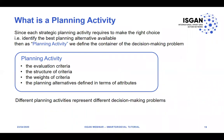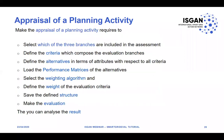Regarding the terminology of the software: since each planning activity requires making the right choice — basically identifying the best planning alternative — we define a planning activity as the container of the decision-making problem. A planning activity is formed by the evaluation criteria, the structure of those criteria, the weights provided for those criteria, and the planning alternatives defined in terms of attributes that compose the performance matrix.